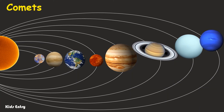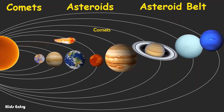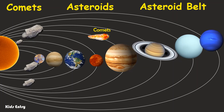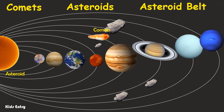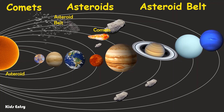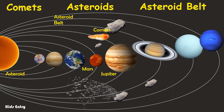Comets are cosmic snowballs of frozen gases, rock, and dust that orbit the Sun. Asteroids are small rocky bodies that orbit the Sun. The asteroid belt is located between the orbits of Mars and Jupiter.